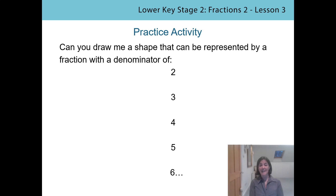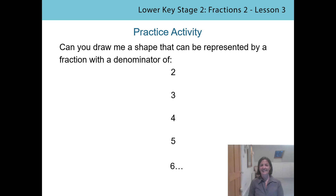We've come to the end of our lesson, but you've done really well! I'd like to set you another practice activity before the next lesson. I'd like you to draw some shapes: draw a shape that can be represented by a fraction with a denominator of two, then a denominator of three, then four, then five — you can go on for as long as you want. Think about what the denominator tells us: it tells us how many equal parts the shape has been divided into. Here are some examples I've drawn — if I draw a circle with a denominator of two, how many equal parts does it need?